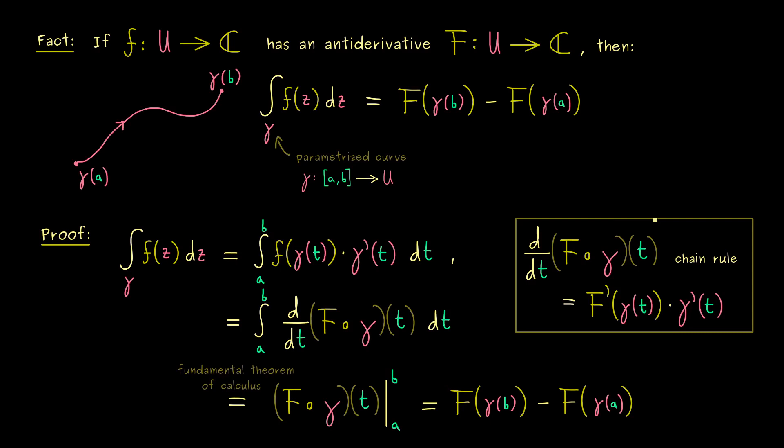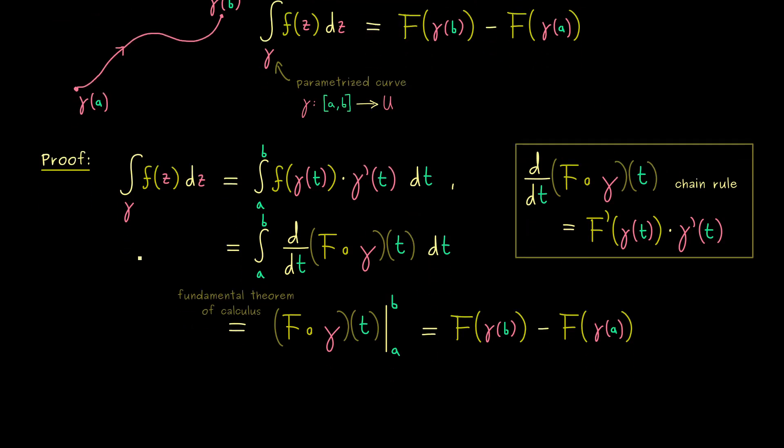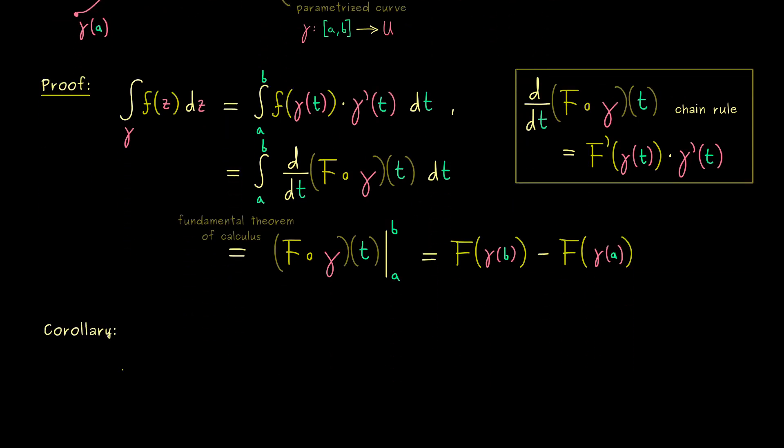And maybe you immediately see an important implication of this fact here. And as usual in mathematics we call something like this a corollary. So as before we assume that we have a function f with an anti-derivative. Moreover now we also assume that the curve gamma in the integral is a closed one. So there you already know from the last video that the notation we used for the integral is a circle at the integral sign.